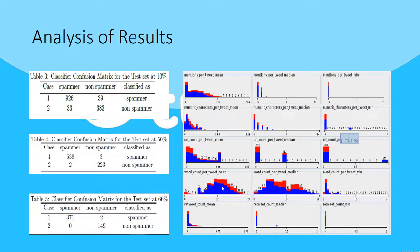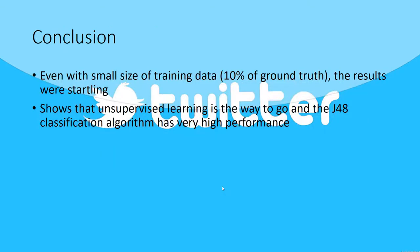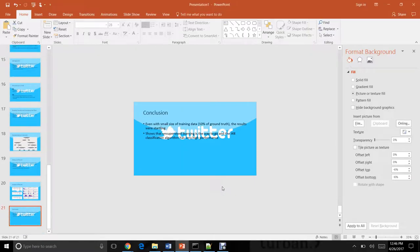We analyzed the results using Weka. On the left we constructed the confusion matrix for the test sets, and on the right Weka helped us identify different features and how spammers and non-spammers differ in them. The red represents the spammer group and the blue represents the non-spammer group, and we can see there are massive differences between them in these particular aspects. In conclusion, the J48 classification technique was very accurate even with very small datasets, showing that classification techniques are something that can be used for spam detection in the future.